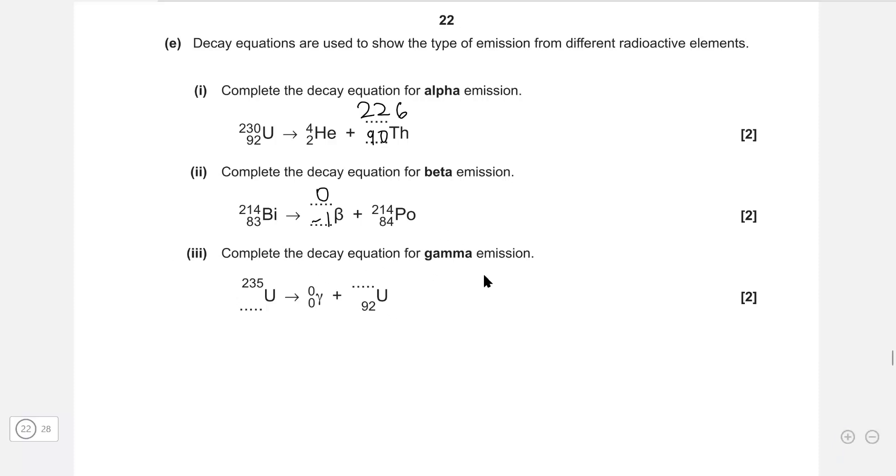Complete the decay equation for gamma emission. The gamma particle is 0, 0 meaning this one here will be just 92, still uranium. And this number is also 0, meaning this number up here will remain unchanged. Remember with equations, they always have to balance out. Quick check: 235 equals 0 plus 235, 214 equals 0 plus 214, 230 equals 4 plus 226.